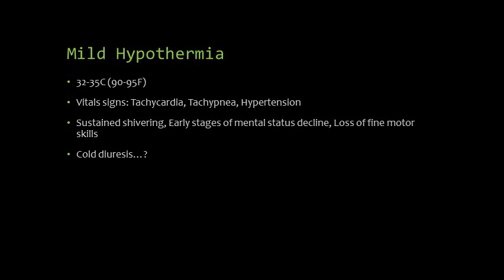Mild hypothermia is defined as a core temp of 32 to 35 degrees Celsius, or 90 to 95 Fahrenheit. At this stage, your sympathetic response is active, so vital signs include tachycardia, tachypnea, and hypertension. Mild hypothermia presents as sustained shivering, early stages of mental status decline — which can be confusion, agitation, or early memory loss — and loss of fine motor skills. It will not present as acute obtundation. Mild hypothermia increases core blood flow, which increases perfusion to the kidneys and results in increased urine output. This is called cold diuresis, and the loss of fluid via urine further increases loss of core temperature.